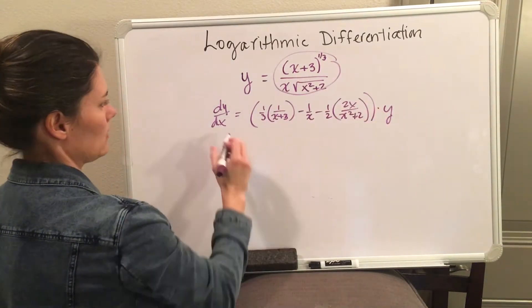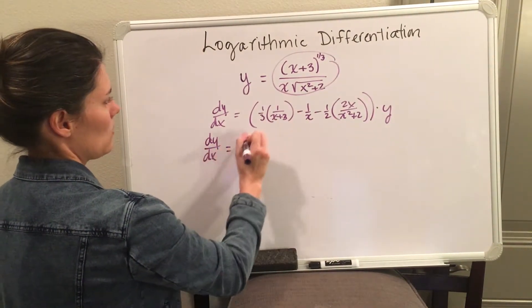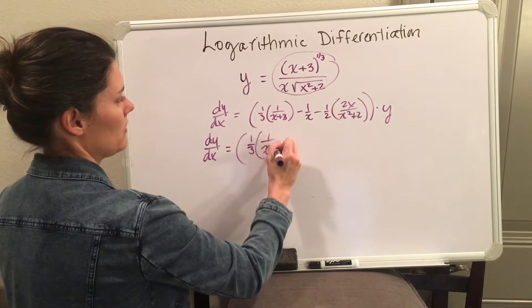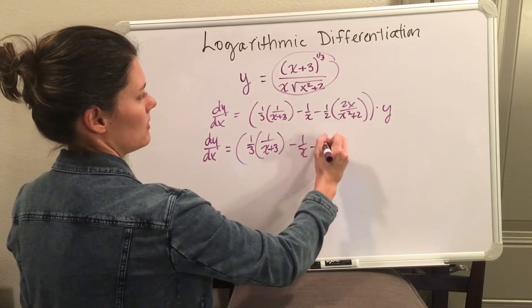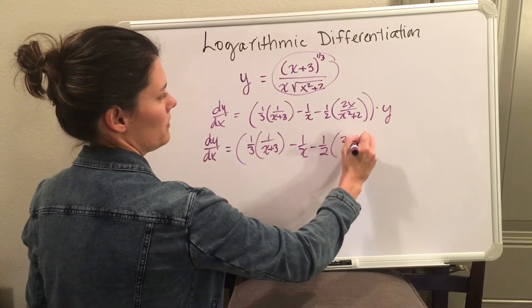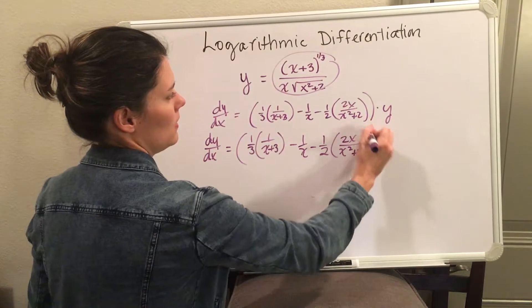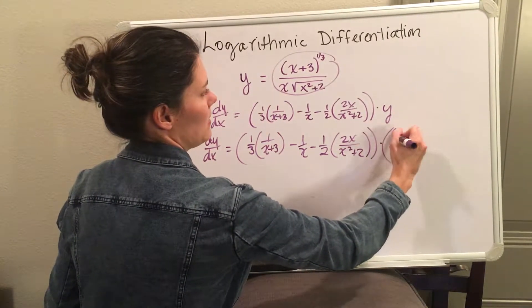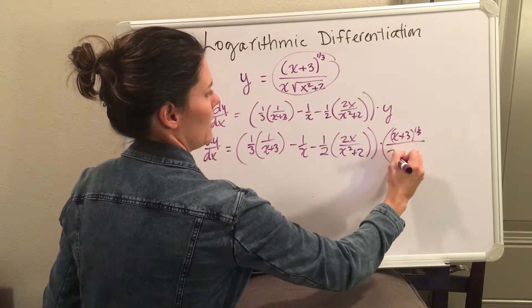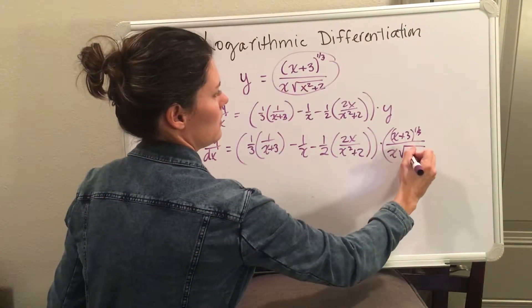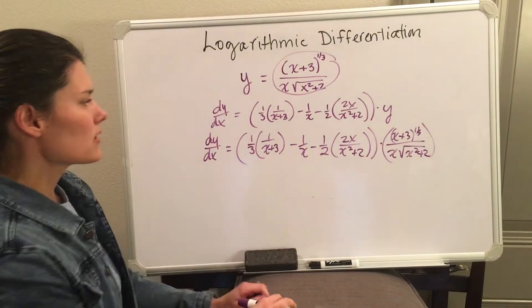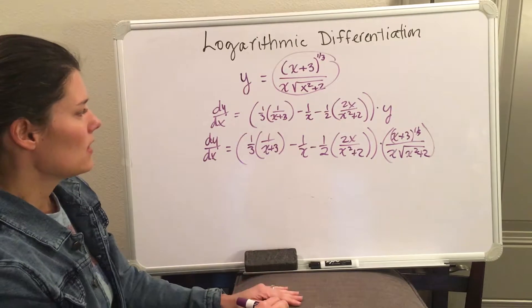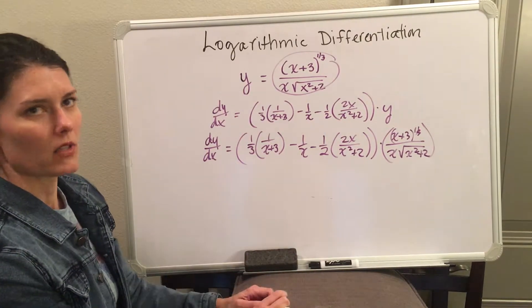You will substitute y back in. So dy/dx equals one-third times 1 over x plus 3, minus 1 over x, minus one-half times 2x over x squared plus 2, times x plus 3 to the one-third, over x times the square root of x squared plus 2. There is a little more you can do with simplifying using common denominators, but this represents the derivative using logarithmic differentiation.